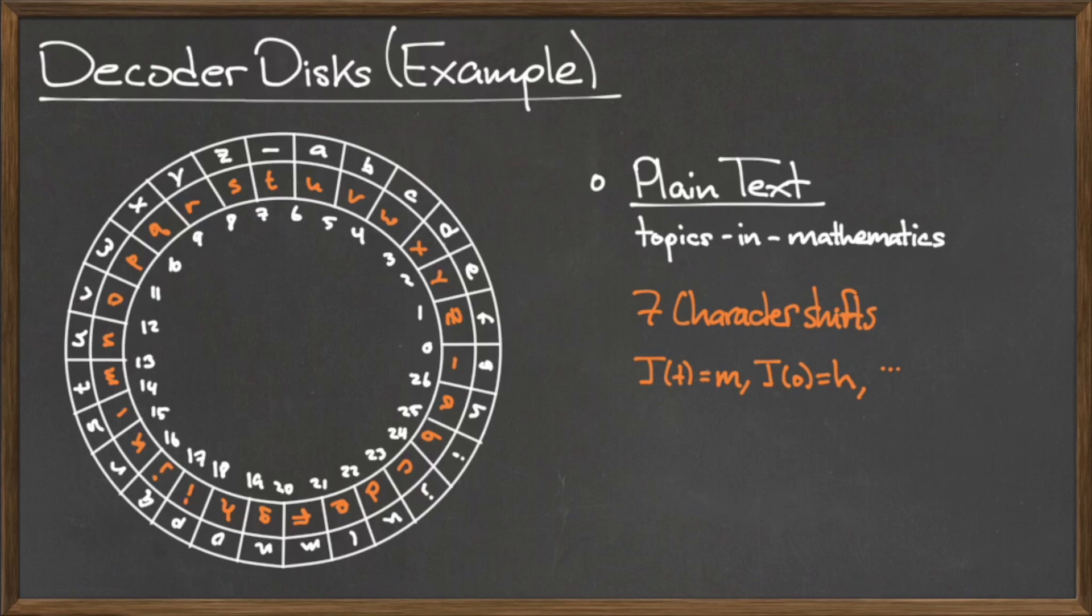So, the T in the word Topics is now sent to the letter M. The O in Topics is sent to the letter H. And so on. We simply find each character in our plaintext message on the outer ring, and write its corresponding inner ring character as part of the encrypted message.